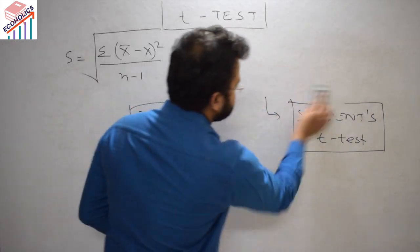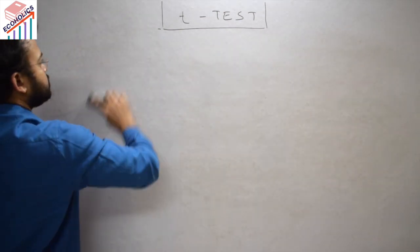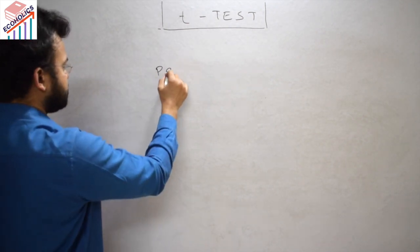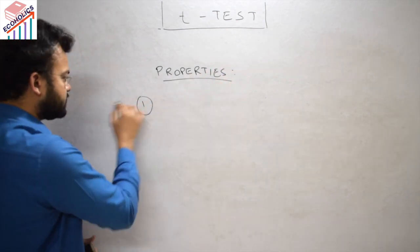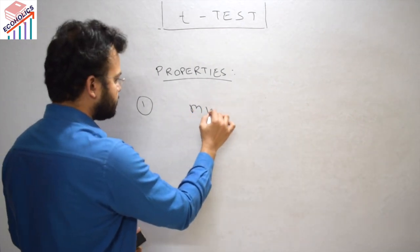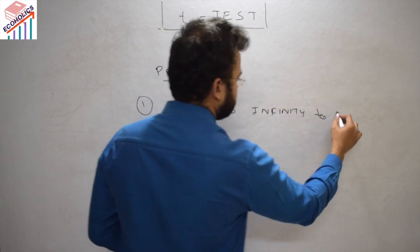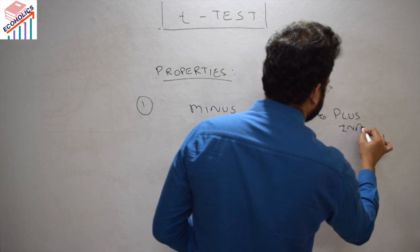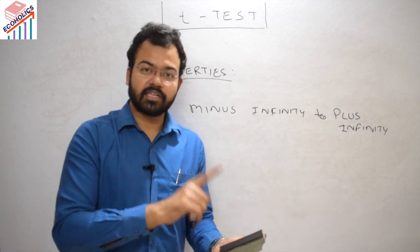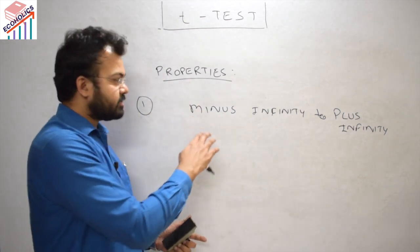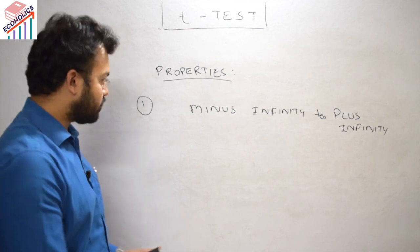We will discuss three important properties in this video. The first property is that the variance of the t-test lies between minus infinity to plus infinity. Similar to how correlation lies between minus 1 to plus 1, the t-test variance lies between minus infinity to plus infinity — that is the first property.